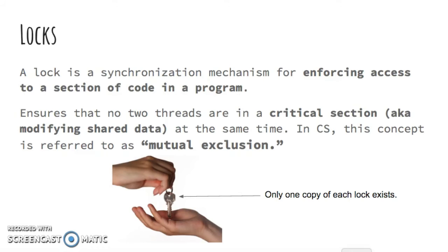Locks ensure that no two threads are in a critical section — also known as modifying shared or global data — at the same time. In CS, this concept is referred to as mutual exclusion. Basically meaning, if I have the lock, then you can't have the lock at the same time.